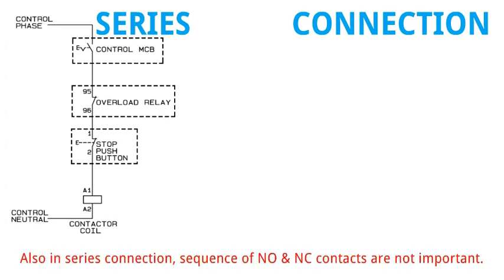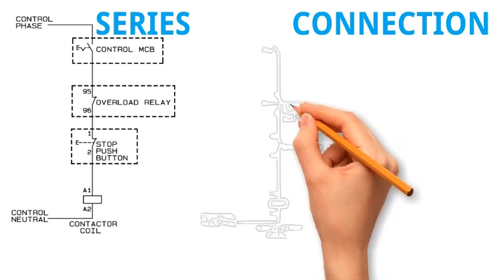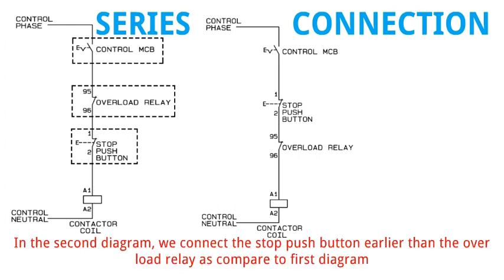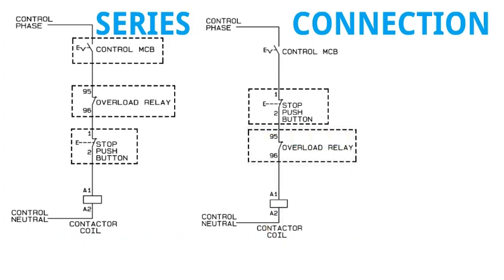Also in series connection, sequence of NO and NC contacts are not important. Look at another diagram. In the second diagram, we connect the stop push button earlier than the overload relay as compared to first diagram. But the working of both drawings are same.